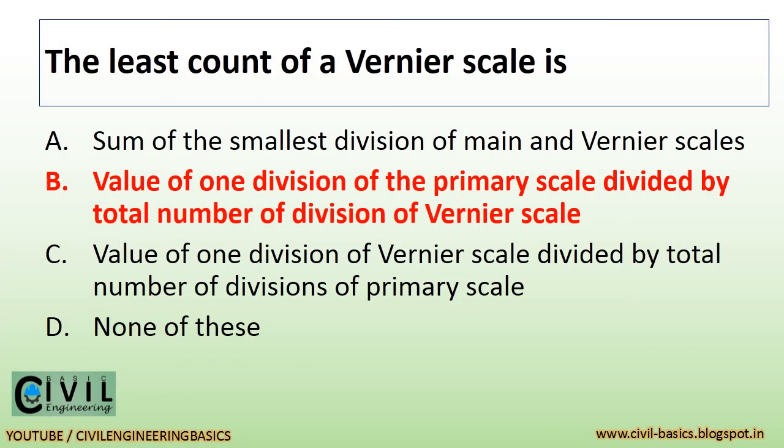The least count of a vernier scale is the value of one division of the primary scale divided by the total number of divisions of the vernier scale.